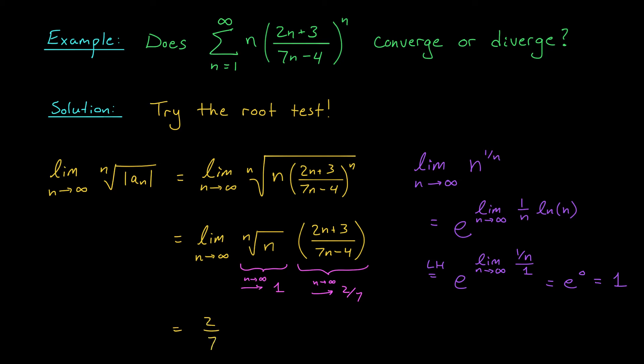So my second term tends to 2/7, my first term tends to 1, so my entire limit for the root test is 2/7. What do we conclude? Our limit is less than 1, and according to the root test, if we get a result less than 1, the series will converge absolutely. Notice that the terms of this series are already positive, so convergence and absolute convergence are the same here. We have a convergent series.